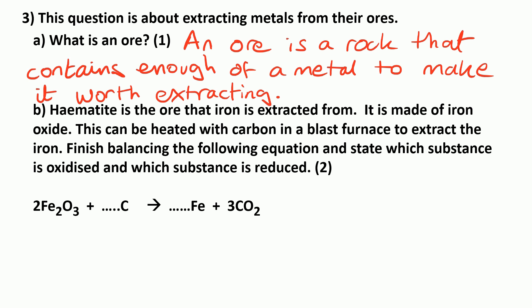So when it comes to balancing the equation, we can see we've got three carbon atoms on the right, so we're going to need three on the left. Remember, we can't change those small numbers. All we can do is put large numbers in front of formulas. Then we can see that on the left, we've got four iron atoms, so we're going to need four on the right.